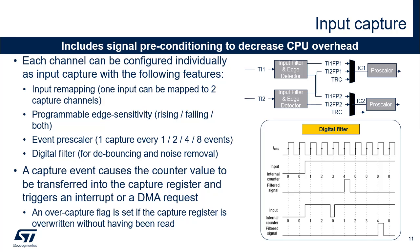Spurious transition events due to noise or bounces can be removed using a programmable digital filter. The figure shows how a signal is filtered out when the filter acceptance is set to 4. In the upper case, a clean rising edge capture is triggered four sampling periods after the rising edge. In the lower case, a glitch causes the filter counter to be reset and the capture to happen after four successive samples at high level. Once the capture trigger is issued, the timer's counter is transferred into the capture register and an interrupt or DMA request can be issued. If a new capture occurs before the previous one has been read, the capture register is overwritten and an over-capture flag is set.